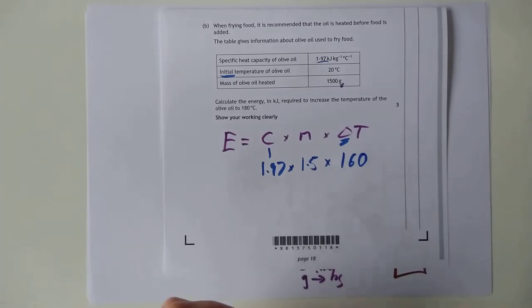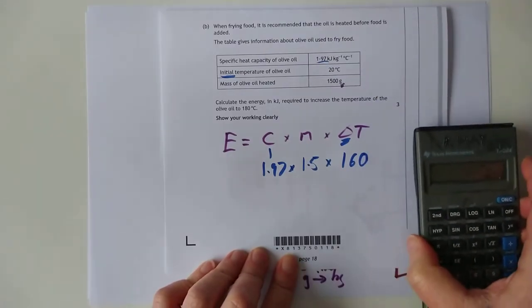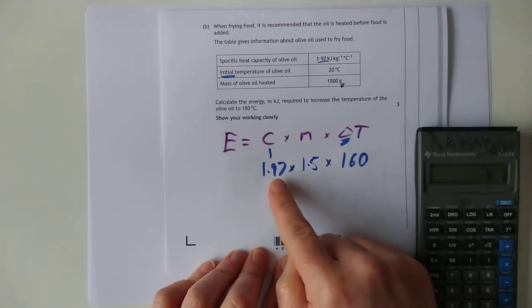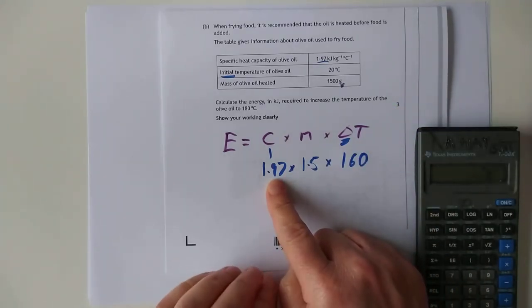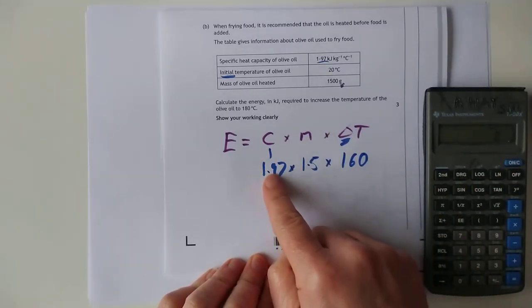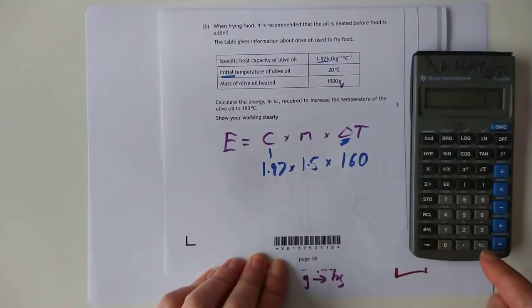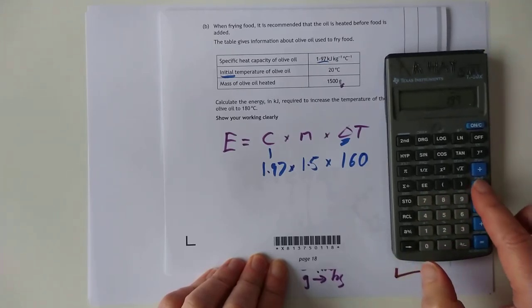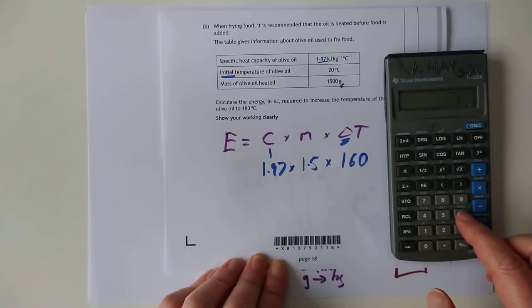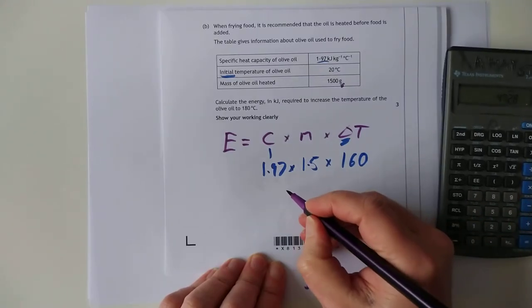Delta just means difference. So that is our calculation today, folks. The reason that's three marks is that people are programmed, including me, just to instantly put 4.18 for this specific heat capacity. And it's why it's such a nasty question. If you did 4.18, by the way, you still get 2 out of 3. So 1.97 times 1.5 times 160 gives us 472.8.